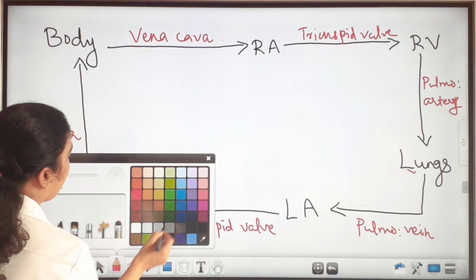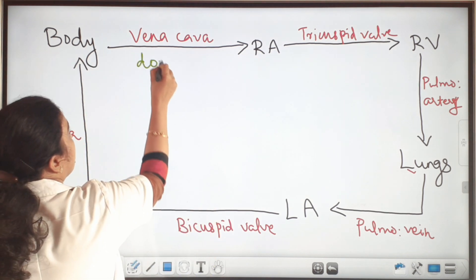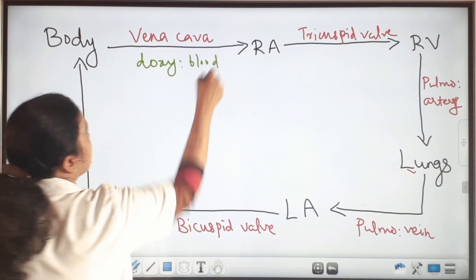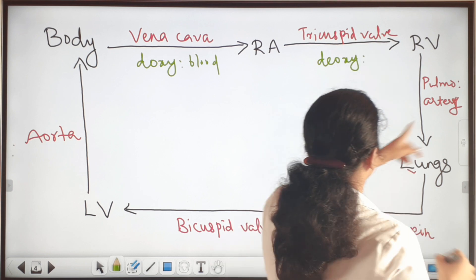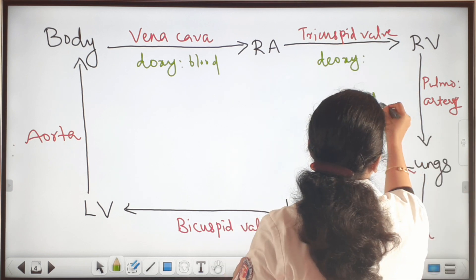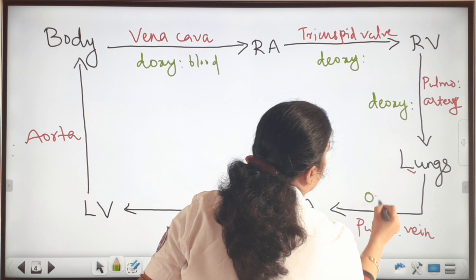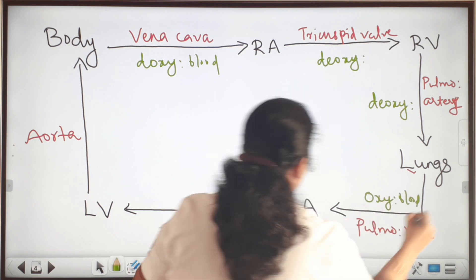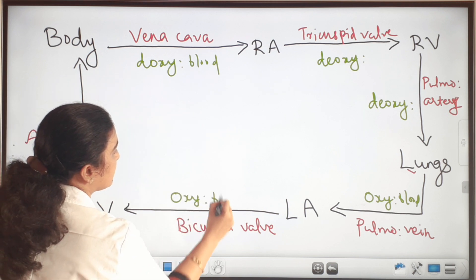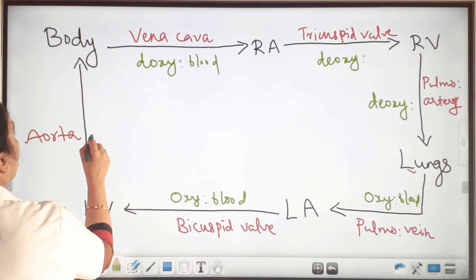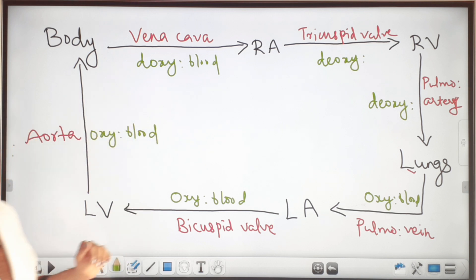Now we can see which type of blood is at each stage. From the body: deoxygenated blood. From the right atrium to right ventricle also: deoxygenated blood. From the right ventricle to lungs also: deoxygenated blood. And from the lungs through pulmonary vein: oxygenated blood. From the left atrium to left ventricle: oxygenated blood. And from the left ventricle to the body: oxygenated blood.